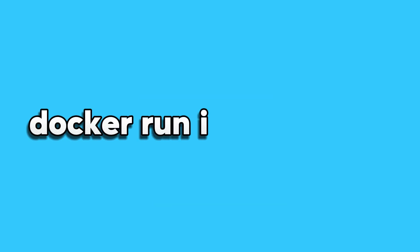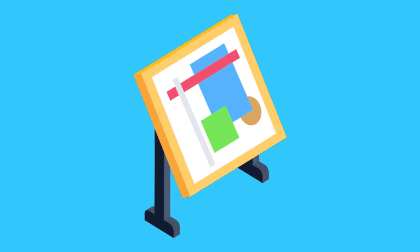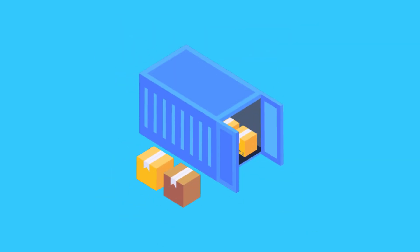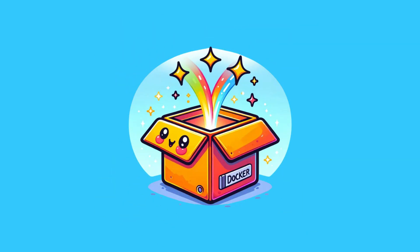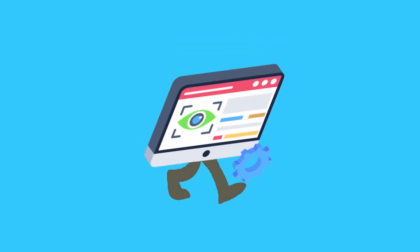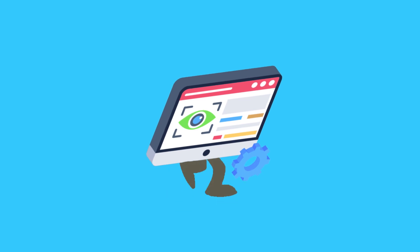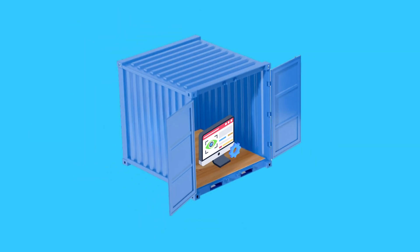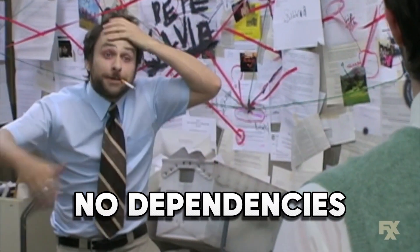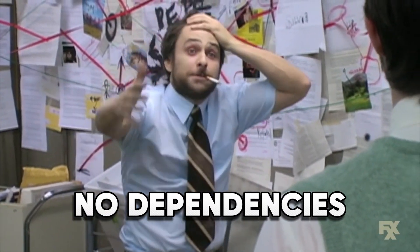With the command docker run and the name of your image, you can transform your image into a running container wherever you want. The container is your finished and sealed magic box — a runnable instance of your image, your running application. Your application lives only in this container and is completely walled off from everything else on a new machine. Therefore, there are no dependency issues and your application runs smoothly.